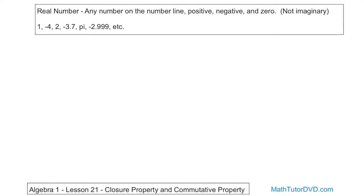So in any case, real numbers are basically any number you could possibly dream up that's not imaginary. It doesn't have an 'i' in there — imaginary numbers have the letter 'i' associated with them, and we'll talk about those much farther in the future. Examples of real numbers would be numbers you're dealing with all the time: the number one, the number two, things like that.